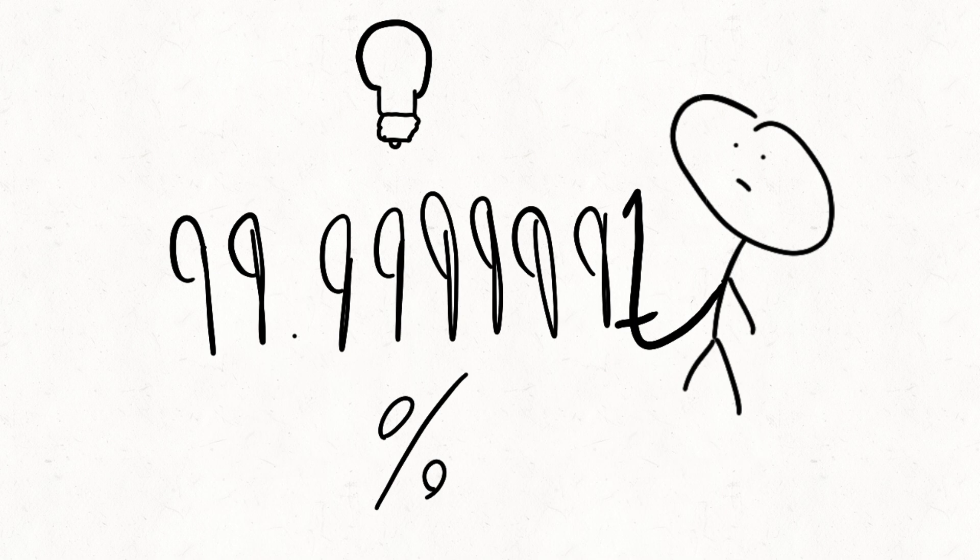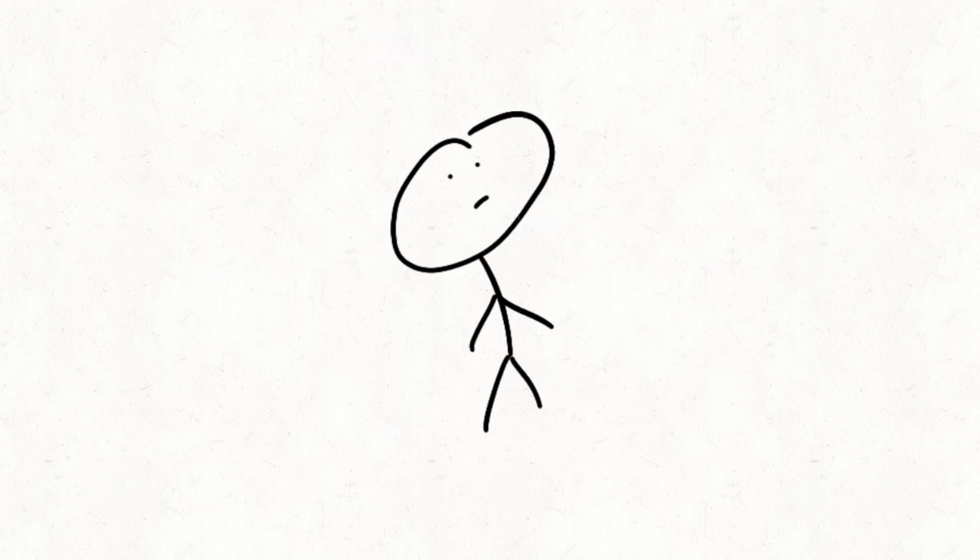And what this can do is it can get a particle to reach about the speed of light. So all we have to do is take two particles, smash those bad boys together, and we get a small black hole.